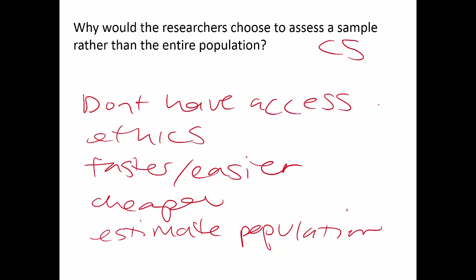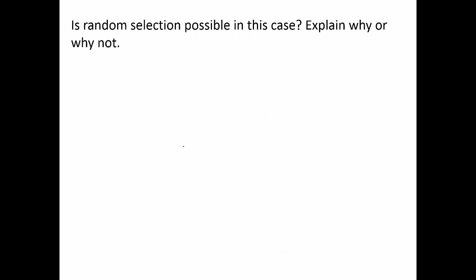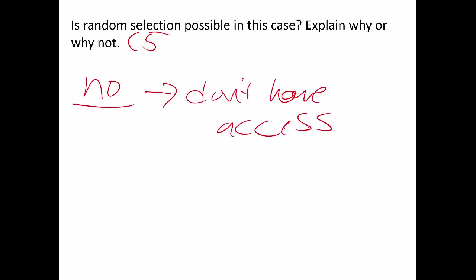The key reason is that I don't have access to everyone in the population. Is random selection possible? This is still chapter five — and that's a big no. I don't have access to the entire population, so random selection would not be possible in this particular example. And I probably couldn't randomly assign them either.